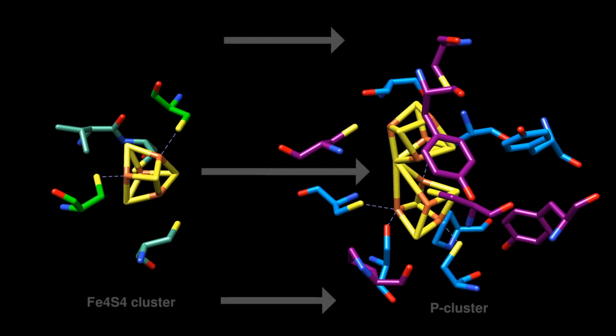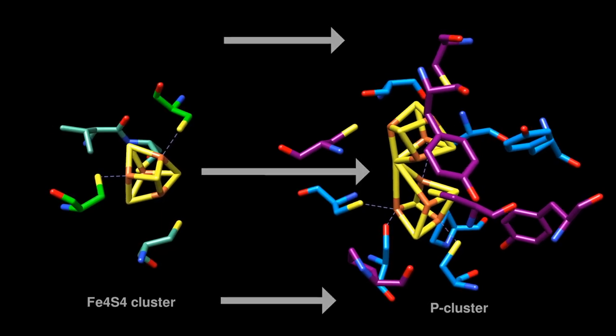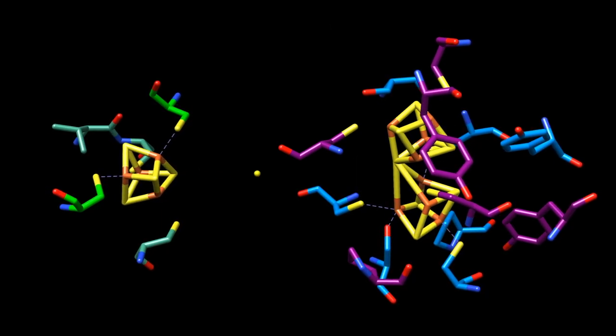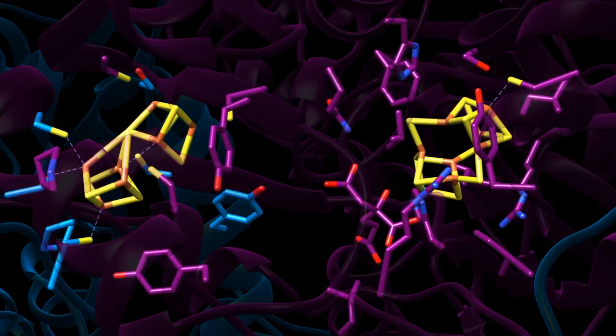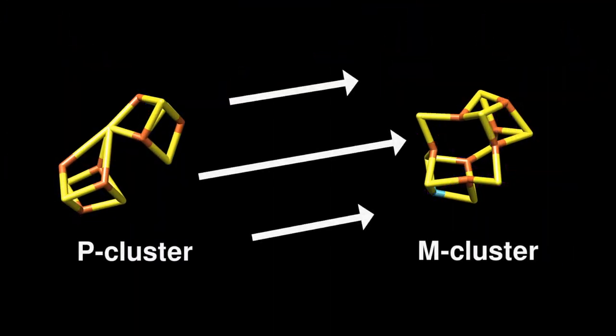Electrons flow from the iron-4-sulfur-4 cluster within the iron protein to the P-cluster within the molybdenum iron protein. Electrons are further transferred to the M cluster, which allows for the completion of ATP hydrolysis.